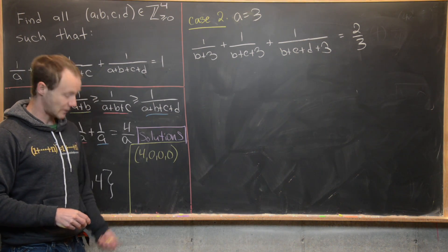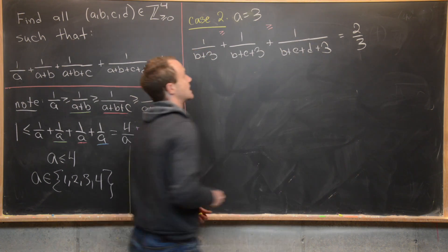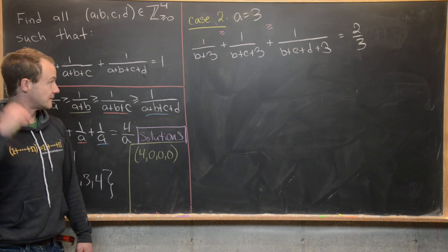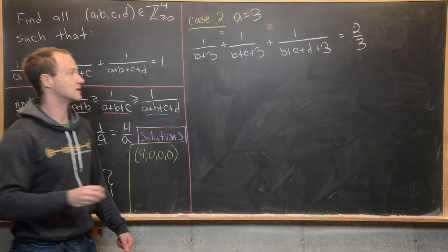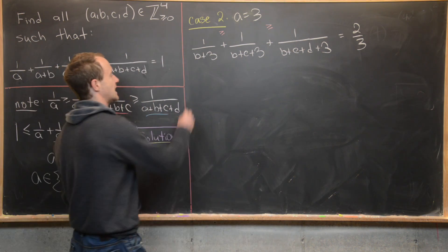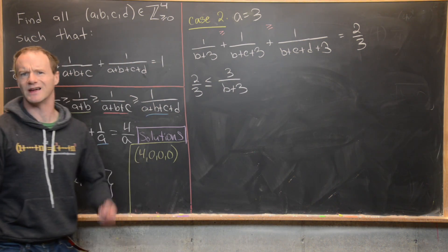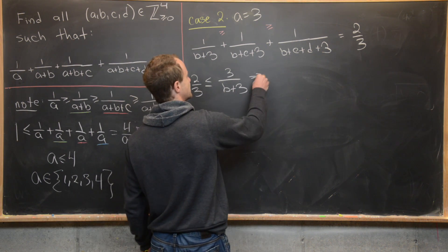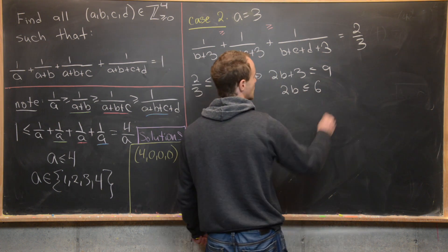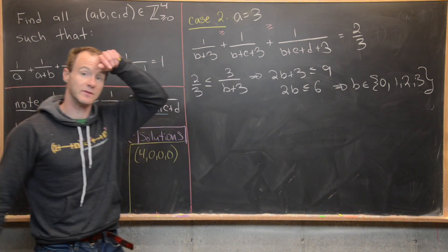Playing the inequality game — the first term is largest — we replace the other two with 1/(B+3), giving: 2/3 ≤ 3/(B+3). Cross-multiplying: 2(B+3) ≤ 9, so 2B ≤ 6, meaning B ∈ {0, 1, 2, 3}. We have four possibilities for B and work through them one at a time.